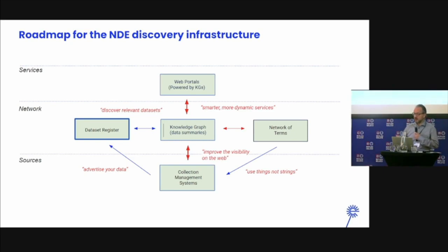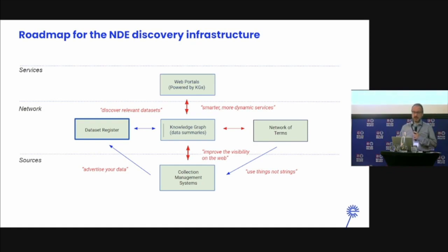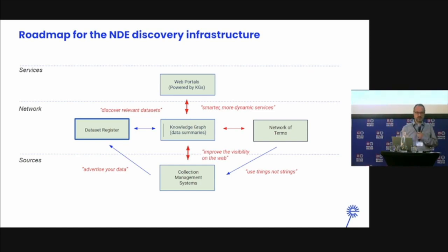This knowledge graph is fed by the dataset register, which I'll be talking about next, to discover relevant data sets in the heritage fields. It's also plugging into the network of terms, which will be another presentation this afternoon. But it all starts with a collection management system at the heritage institutions. There is a lot of data, and they should advertise this data in the dataset register so it's known which data sets are out there. These collection systems should use more links and not strings, so they use terms from a network of terms.